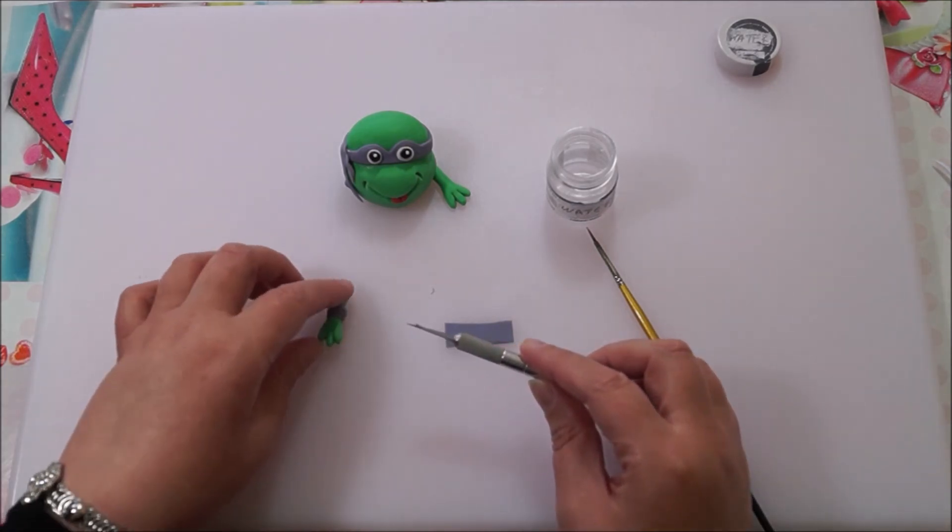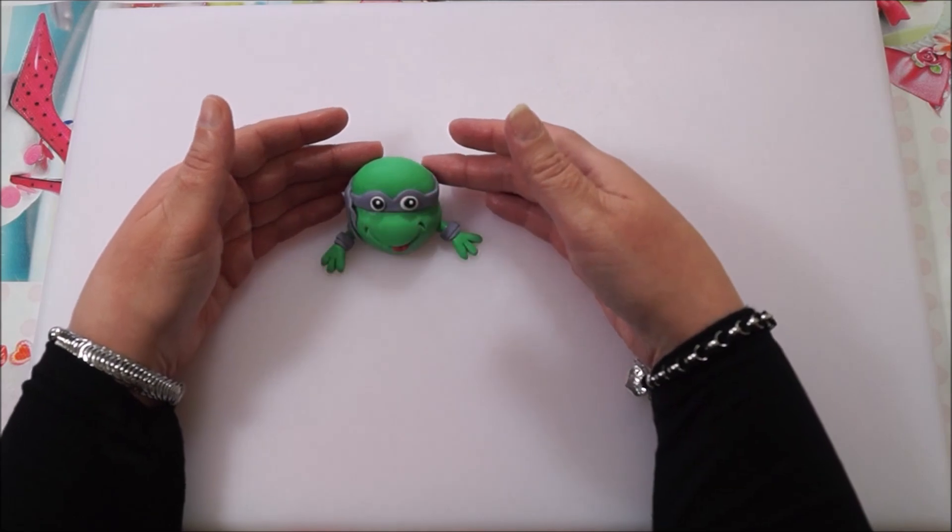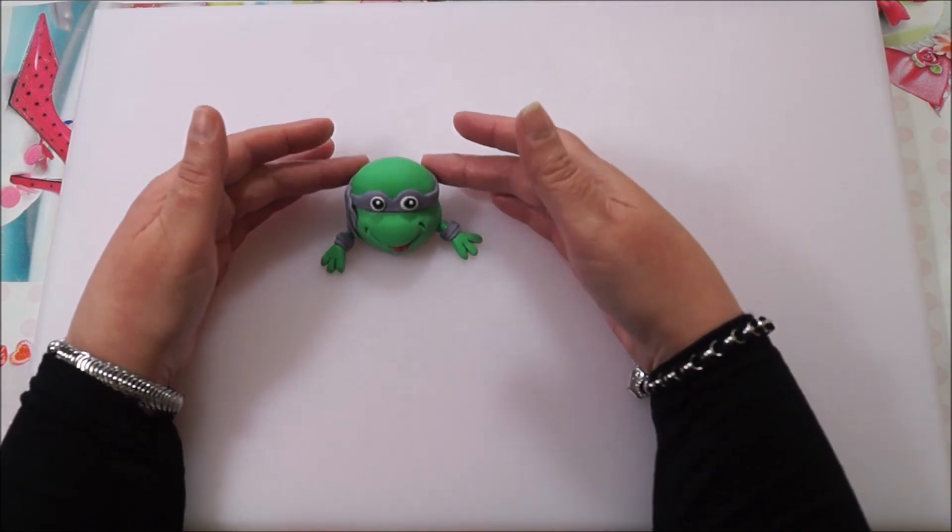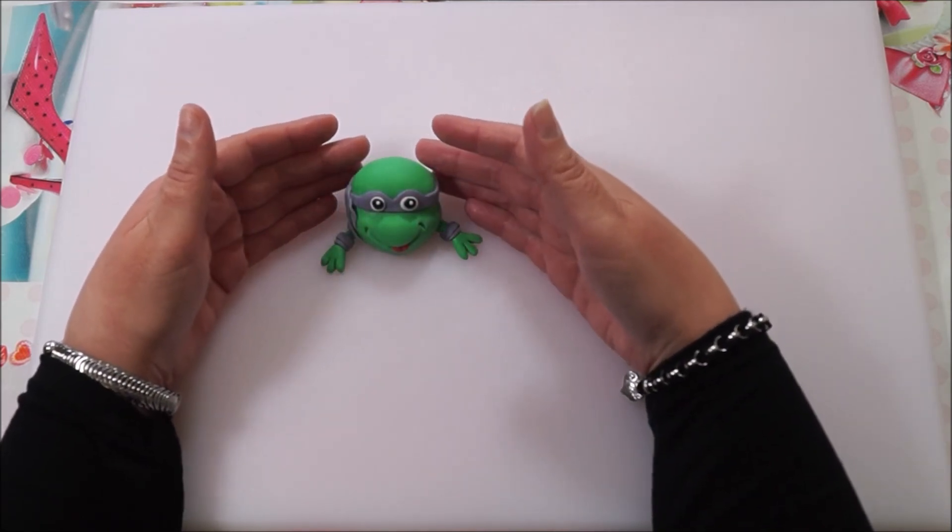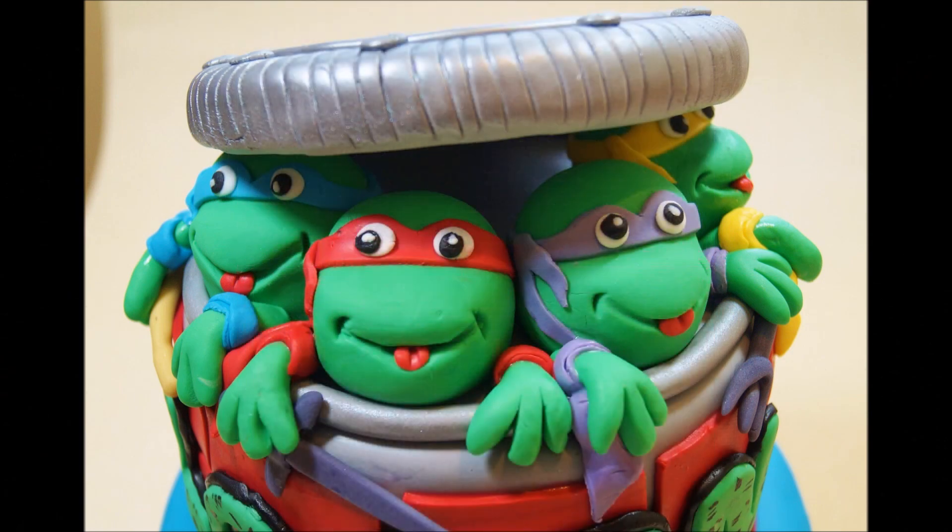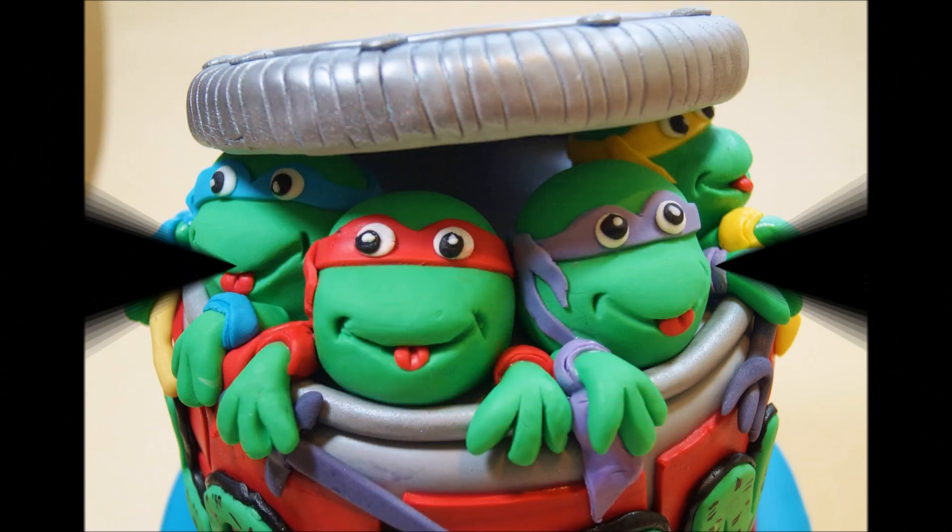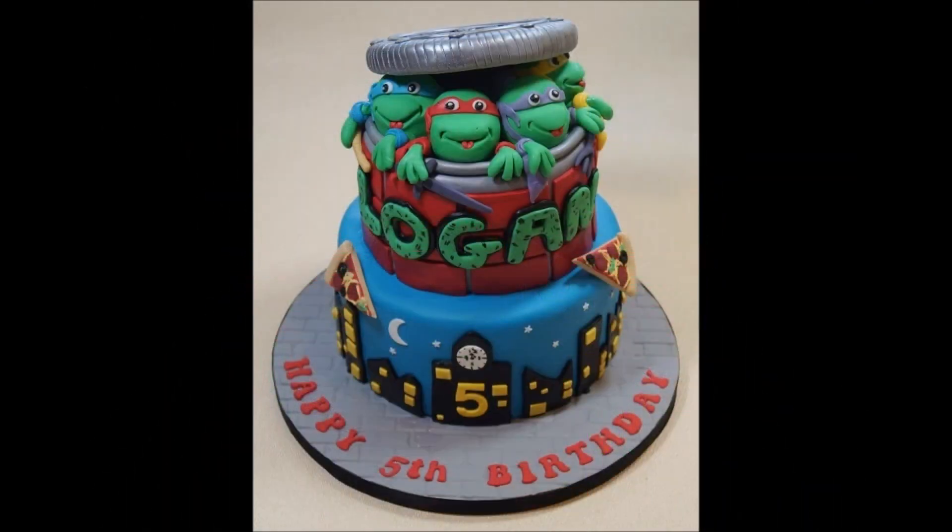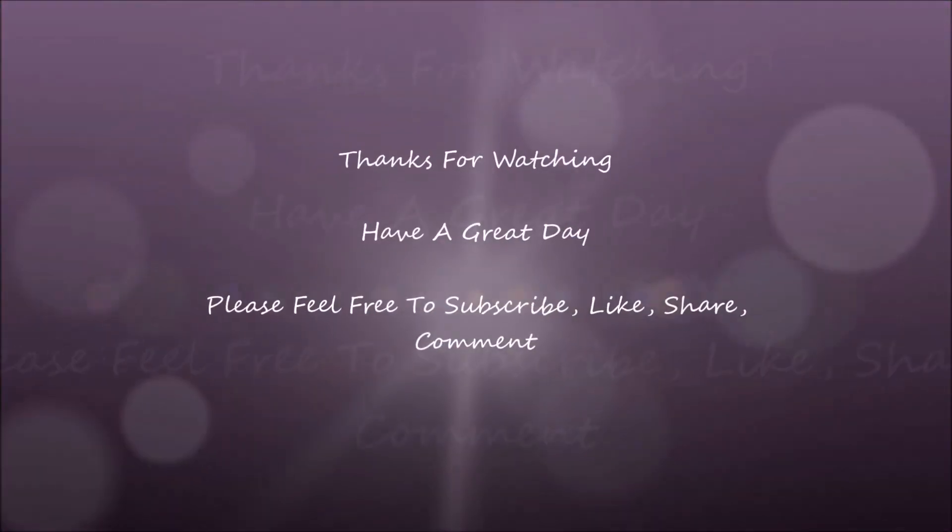There you have your Teenage Mutant Ninja Turtle ready to be placed on the cake like this. Just make your different colored headbands to finish them off. This is the cake that I placed them on. I hope you found this tutorial helpful and useful. Thanks for watching, bye bye!